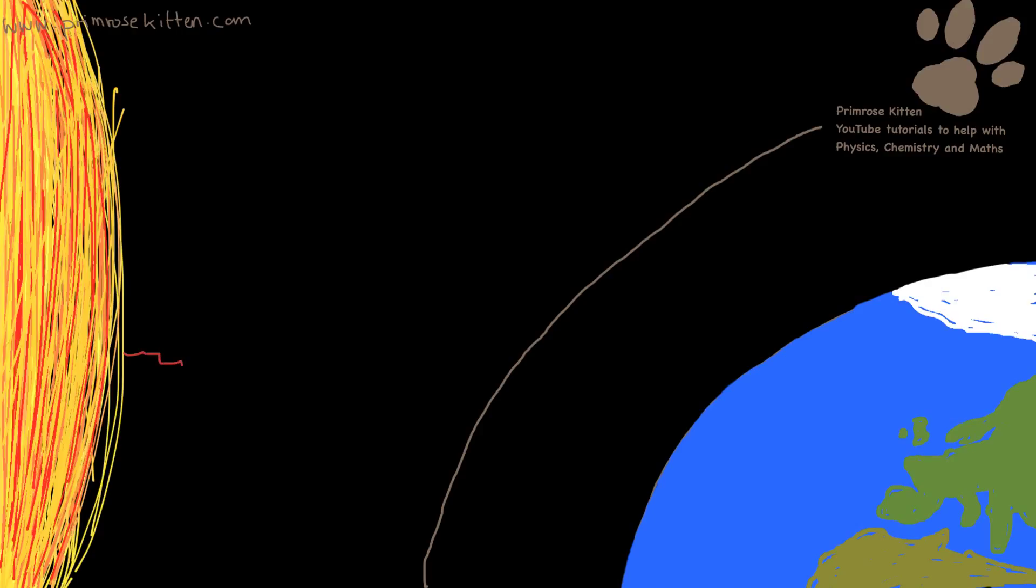It comes from the sun down to the earth, and because of the wavelength, it can pass through the atmosphere. Now, some of this gets absorbed by the earth, and some of it gets bounced back out.